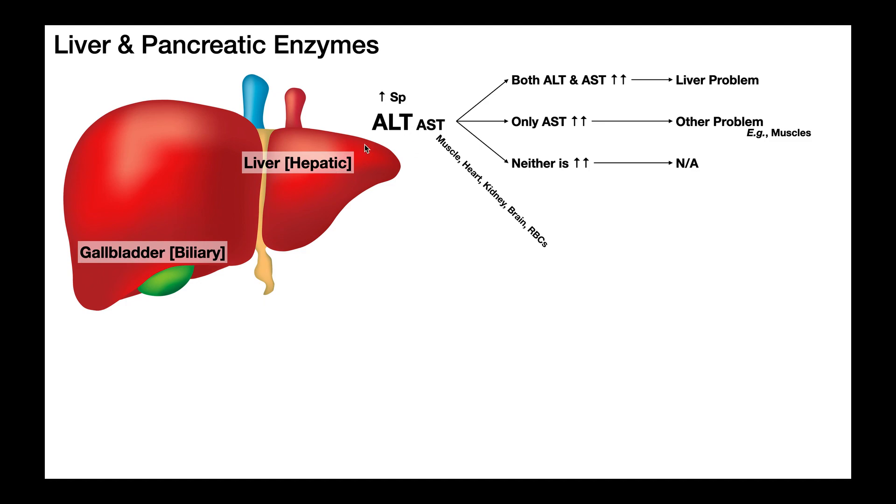So coming back to this, the liver contains these two enzymes, ALT and AST. So ALT is very, very, very specific to the liver, meaning that this enzyme is found predominantly in the liver, whereas AST is not specific to the liver. It is contained in the liver, but it's also contained in skeletal muscle, the heart, so cardiac muscle, the kidneys, brain, and red blood cells. So what does this mean? Well, if you have a liver problem, you're going to expect both ALT and AST to be elevated. Again, both of these enzymes are found in the liver, especially this ALT. It's very specific to the liver. So if ALT is elevated along with AST, you have a liver problem.